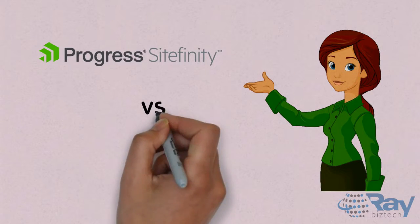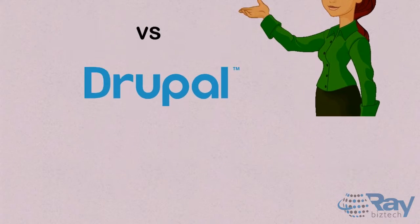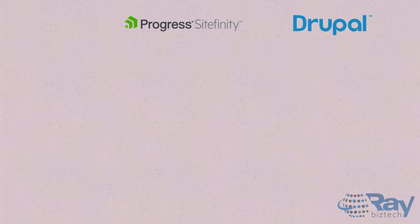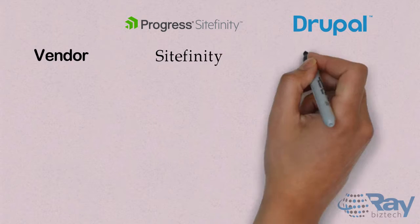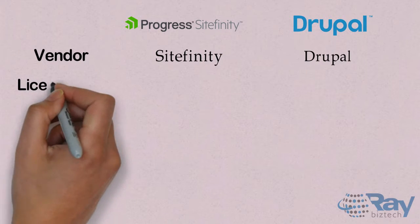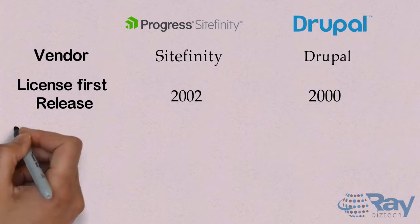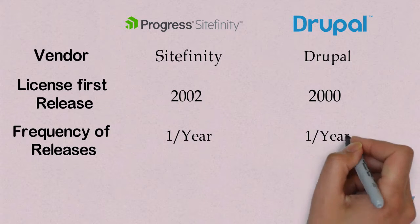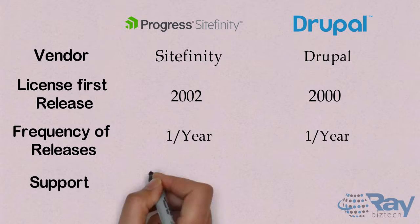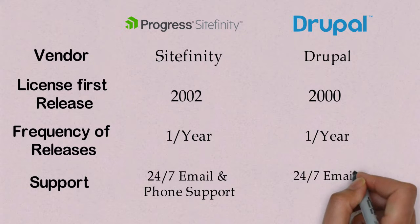Comparison between Sitefinity and Drupal. The vendor for Sitefinity is Sitefinity, and for Drupal it is Drupal. The first release was in 2002 for Sitefinity and 2000 for Drupal. The frequency of releases is once per year for both platforms. Both Sitefinity and Drupal offer 24x7 email and phone support.